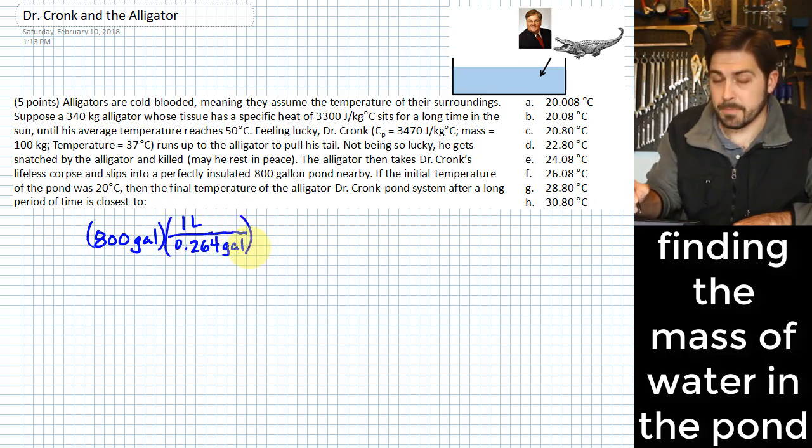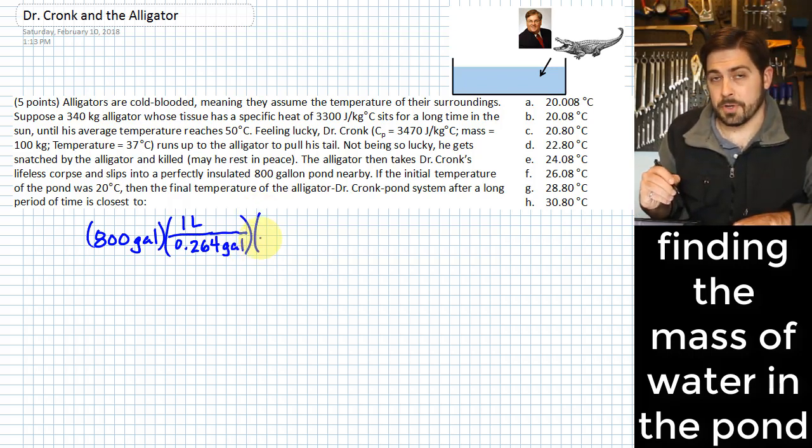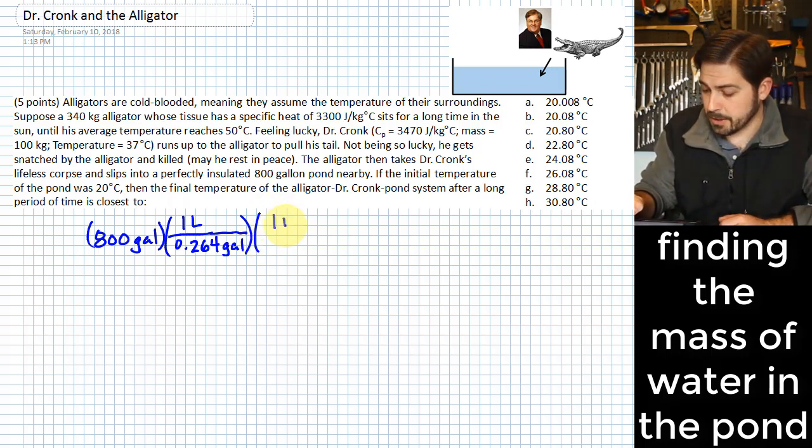And so we can make a conversion from gallons into liters using that fraction. We also know that the density of standard water is just one kilogram per liter. And so we see how these units cancel out. We can also cancel out the gallons.